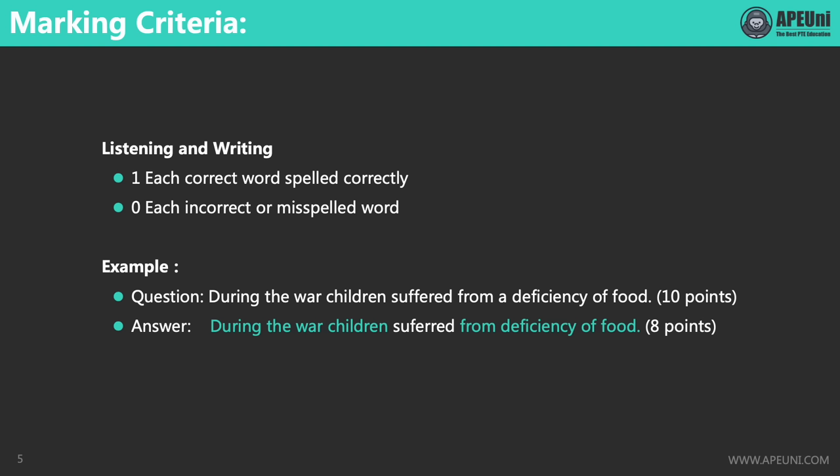The sentence in the question is: During the war, children suffered from a deficiency of food. There are in total 10 words in the question, so the maximum score for this question is 10. If my answer is: During the war, children suffered from deficiency of food — I only get 8 words correct, so my score is 8. I spelled the word 'suffered' wrongly and I missed the word 'a' before 'deficiency'.